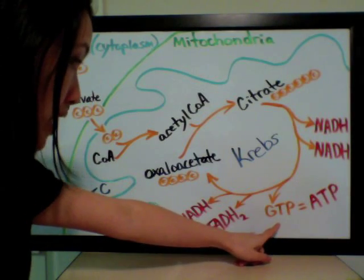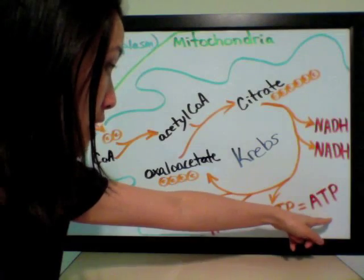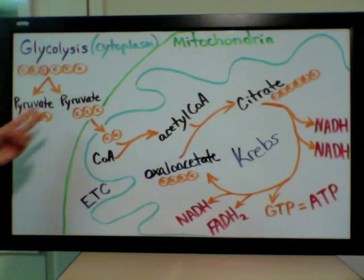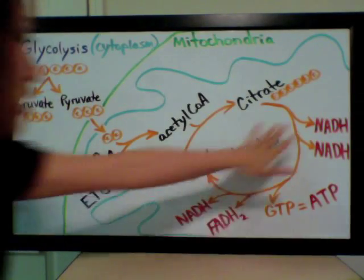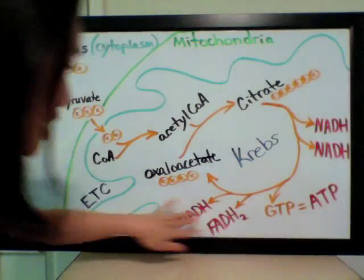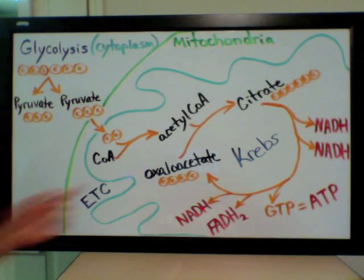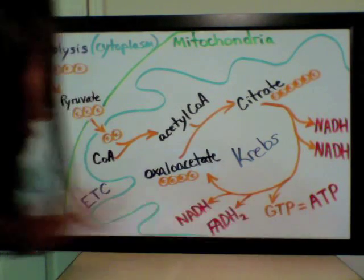The Krebs cycle also produces one GTP, which is easily converted to an ATP, so it's considered an ATP equivalent. Since each glucose molecule gives us two pyruvates, this turns the Krebs cycle twice — so we multiply all of these energy molecules by two for each glucose molecule. Therefore, for each glucose we make six NADHs, two FADH2s, and two ATPs from the Krebs cycle.